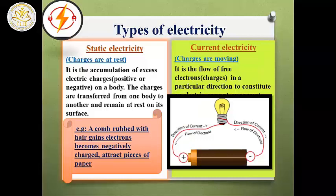The charges can transfer from one object to another but remain at rest on the surface. Like the comb — when rubbed with hair, the comb gains electrons and becomes charged, and can attract pieces of paper. While dynamic or current electricity is the moving of electrons.